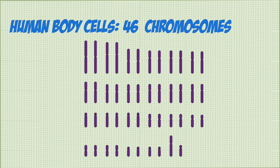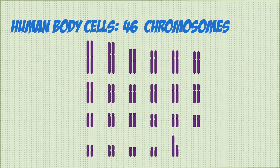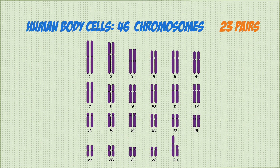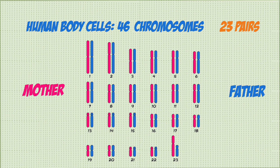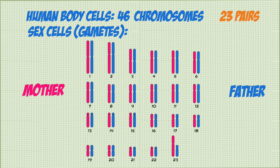In humans, there are a total of 46 chromosomes in the form of 23 pairs, where one of the pair comes from the mother of the organism and the other comes from the father. Sex cells, also called gametes,